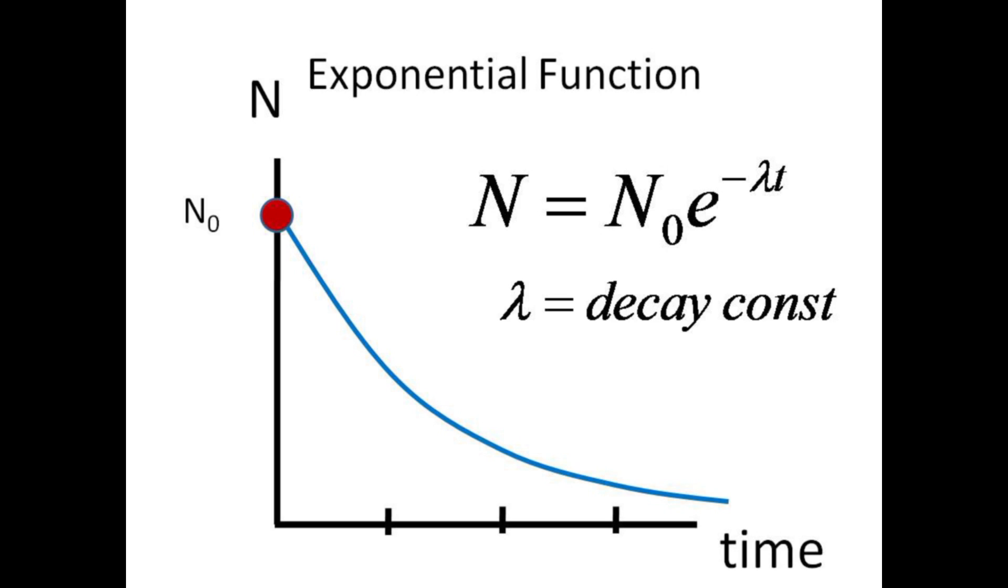The decay constant lambda enables us to use the exponential function as we did in the case of the discharging capacitor. Instead of one-half raised to some power, we have e, the base of the natural logarithm, raised to the negative of lambda times time.